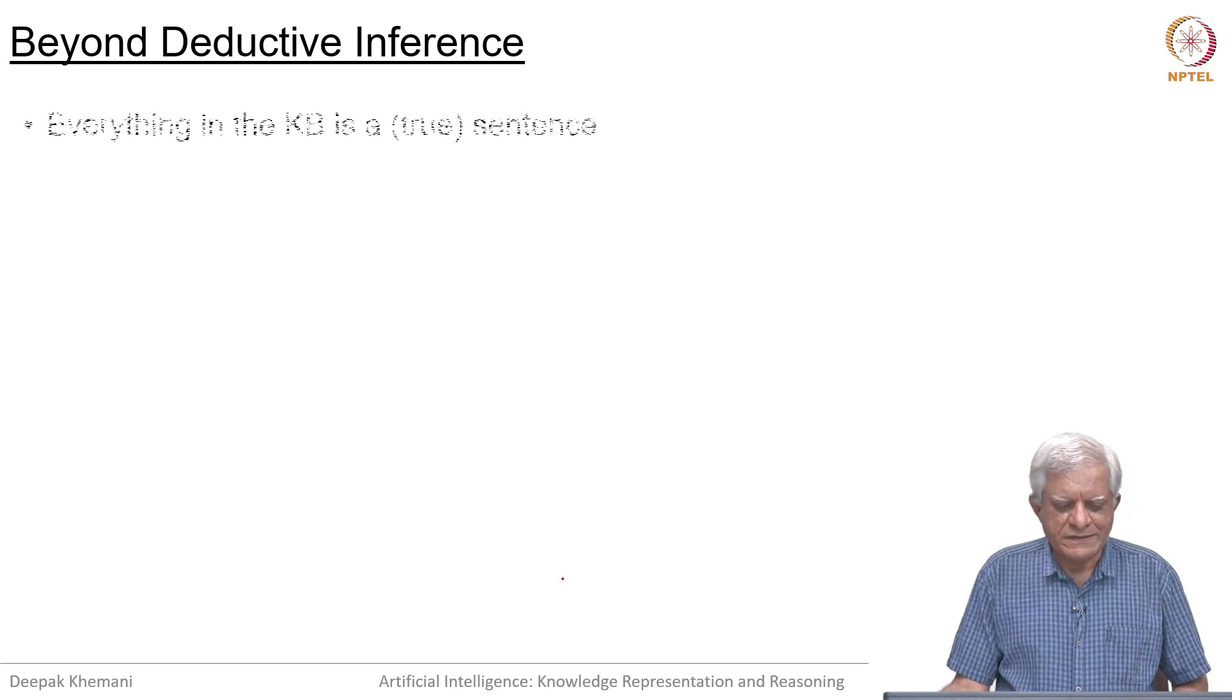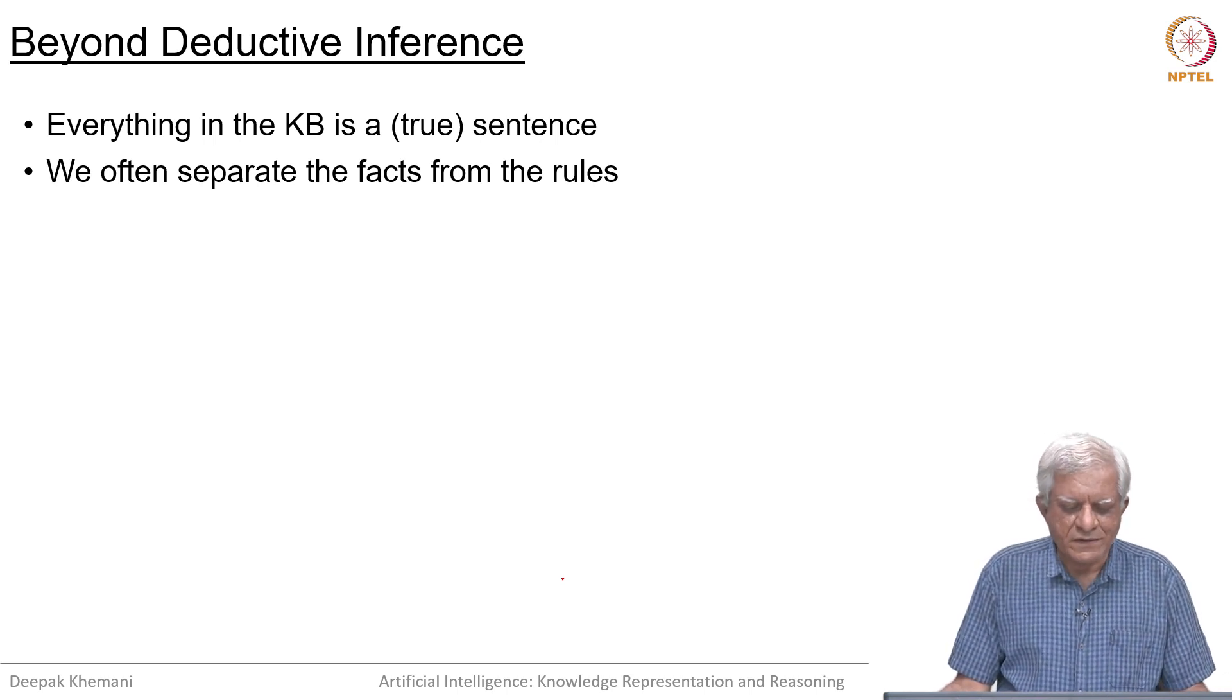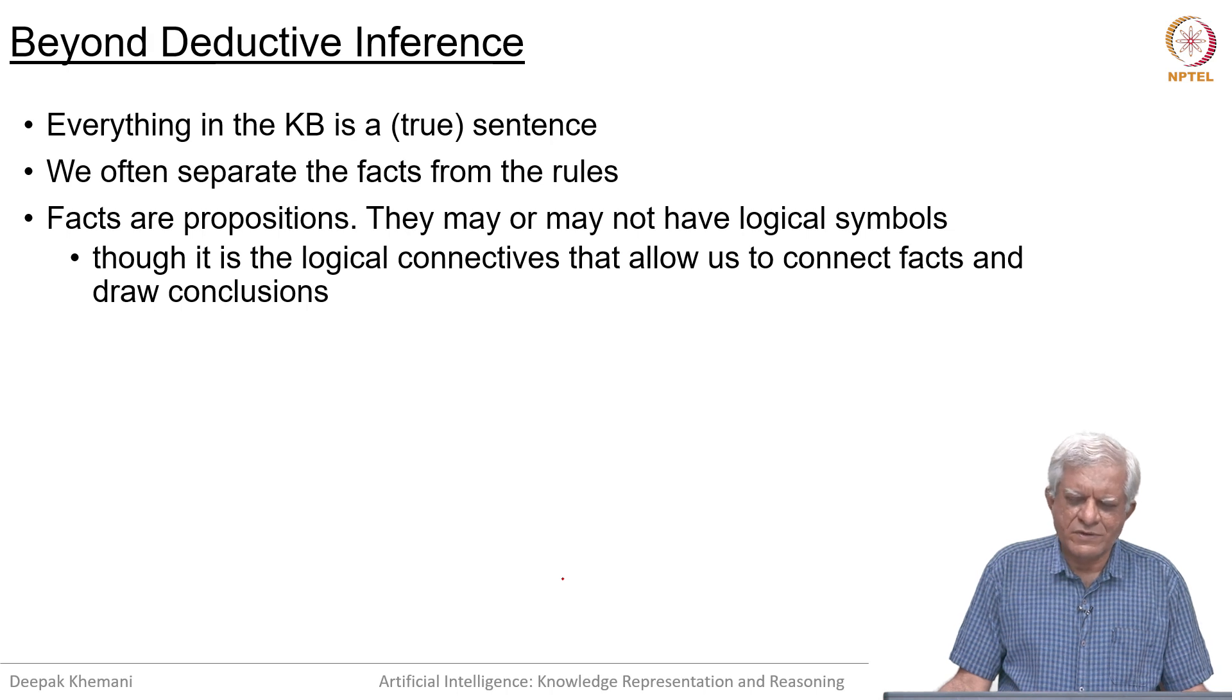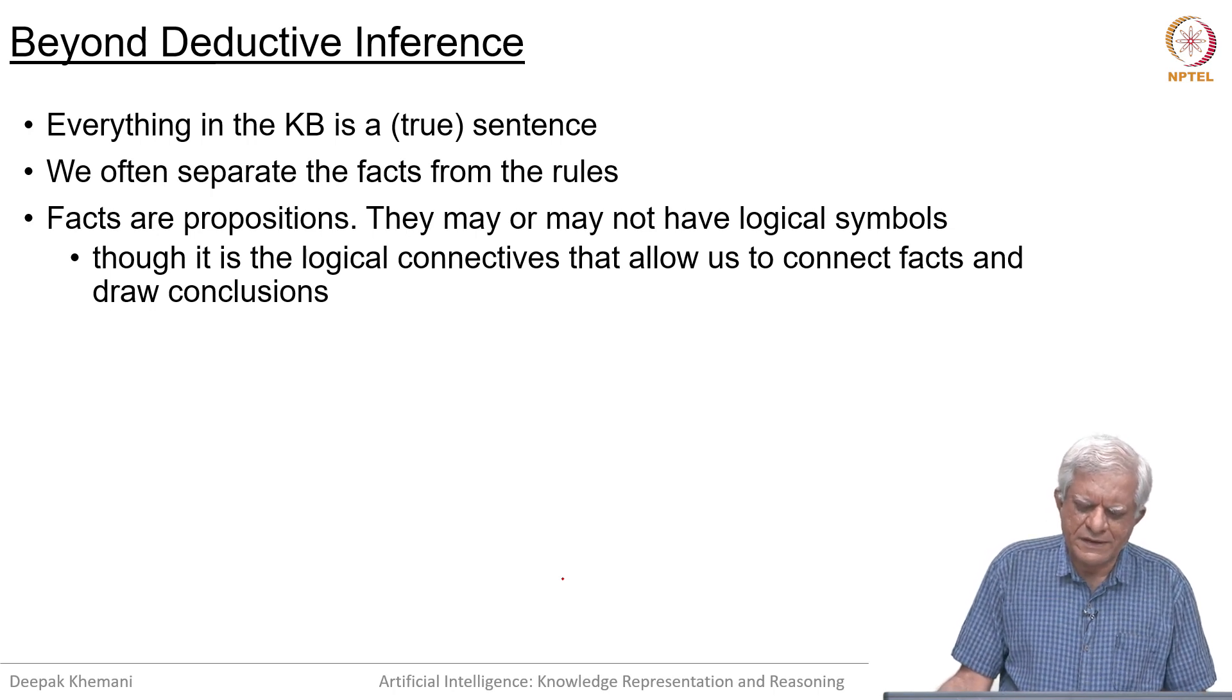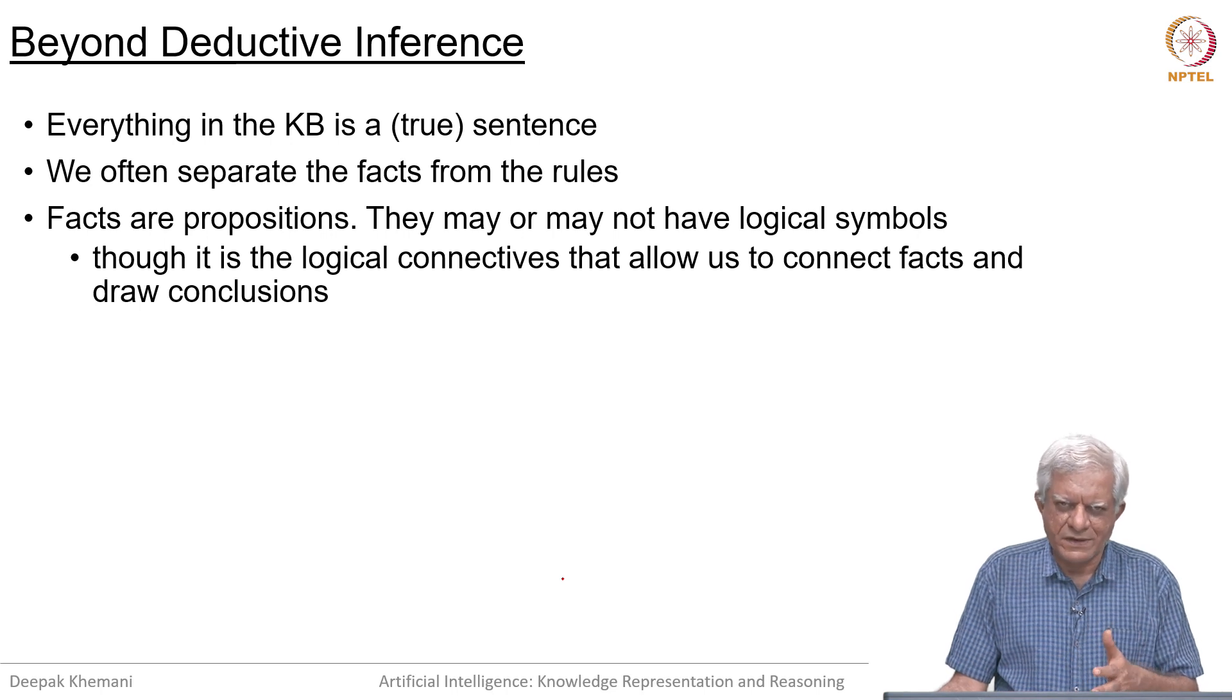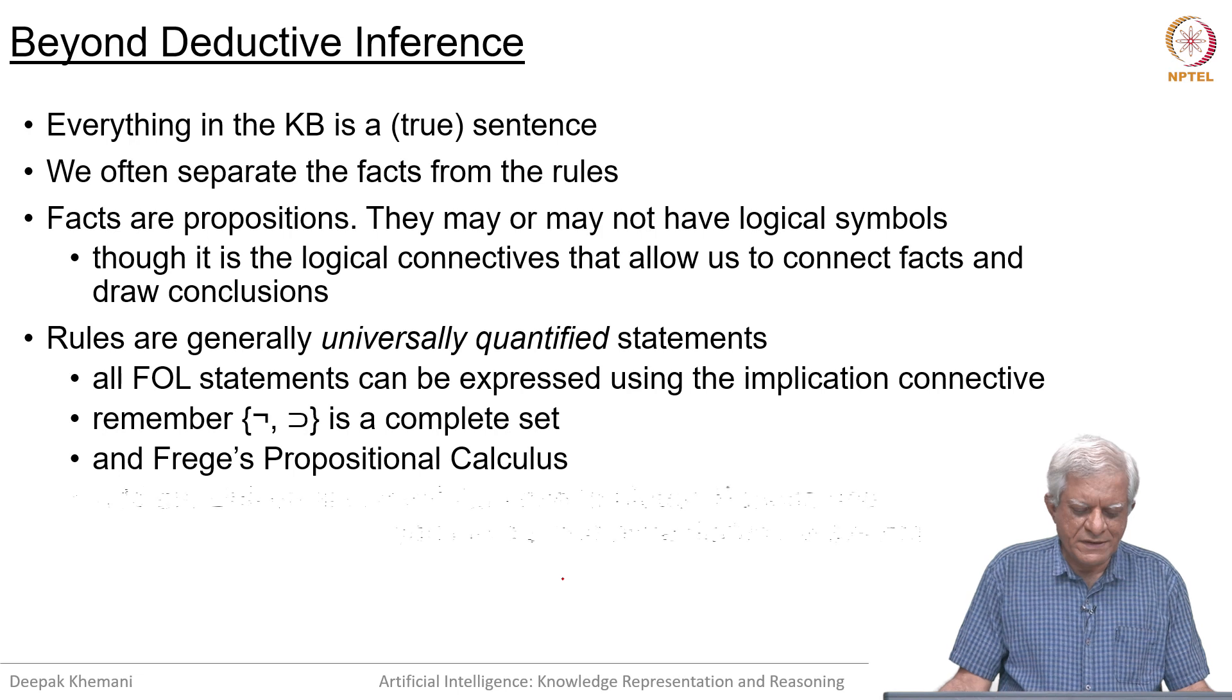We want to move beyond deductive inference essentially. One thing that we would like is that our knowledge base is a collection of true sentences. We do not want a knowledge base to be inconsistent to start with. We have seen that we often tend to distinguish between facts and rules. Facts are basically propositions. They may be statements about individuals in the domain or even universal statements which are true, but they are generally, they often do not have logical symbols connecting them though they could still have. We could say that peppy is a parrot or peppy is a penguin, that is a fact and we have used the disjunction there.